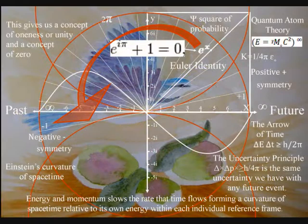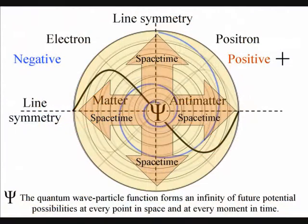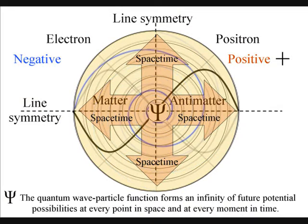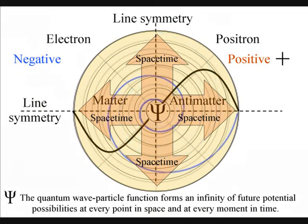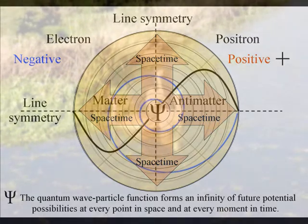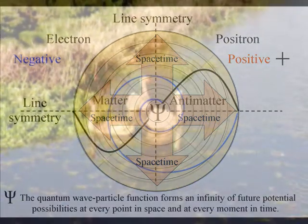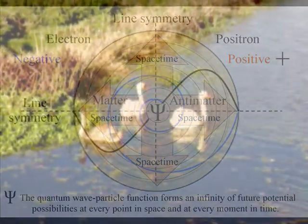In this way, they form a vortex in space formed by the rate that time flows and are therefore always at the center of their own reference frame. It is because life can choose when and where to collapse a quantum wave particle function or probability function, breaking the symmetry, that we have free will. Life will create its own ripples in the fabric of space-time, forming its own broken symmetry of its own evolutionary path.